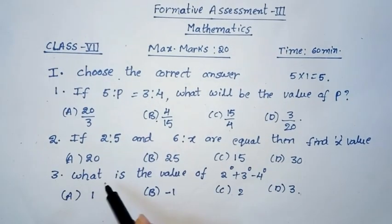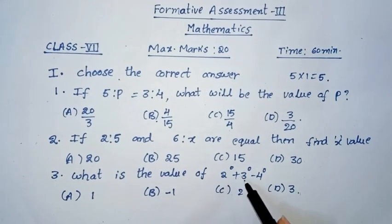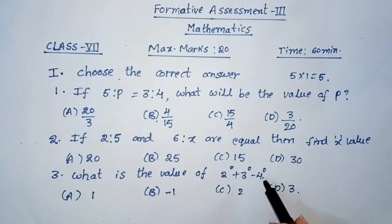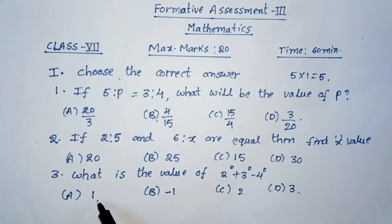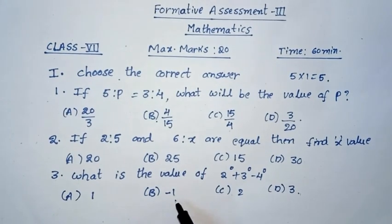Third question, what is the value of 2 power 0 plus 3 power 0 minus 4 power 0? Option A, 1. Option B, minus 1. Option C, 2. Option D, 3.